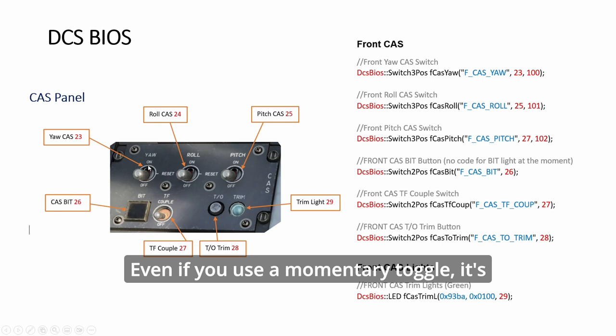Even if you use a momentary toggle, it's going to be one side and either side. When you have a three-way toggle, either side is going to make this come down. So the only way to make it work is a two-way toggle.